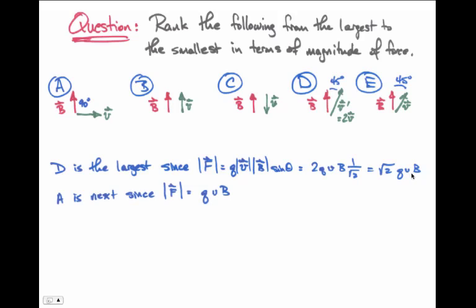The next largest is A. In this case, because the angle is 90 degrees between the velocity vector and the magnetic field, the sine of that angle 90 degrees is one, and the magnitude of the force is Q times V times B, about 40% smaller than case D.